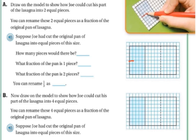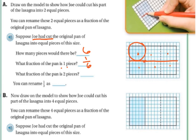So I'm going to draw a line right here in half. You can rename these two equal pieces as a fraction of the original lasagna. Suppose he had cut the original pan into equal pieces of this size — how many pieces would there be? If he did that all the way through, there would be six pieces. What fraction of the pan is one piece? That would be one-sixth. What fraction of the pan is two pieces? That would be two-sixths, because you have two pieces of the six. So you can rename one-third as two-sixths.